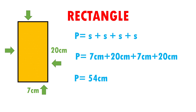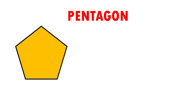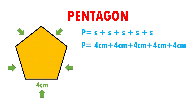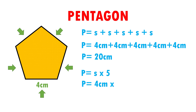This means that the outline of the rectangle measures 54 cm. Now, the pentagon. Each of its sides measures 4 cm. The formula is perimeter equals side plus side plus side plus side plus side. Substituting data, perimeter equals 4 cm plus 4 cm plus 4 cm plus 4 cm plus 4 cm. When adding, the perimeter is equal to 20 cm. Since all the sides of the pentagon measure the same, I can also use the formula: perimeter equals side times 5. Perimeter equals 4 cm times 5, which gives perimeter equals 20 cm. The outline of the pentagon is 20 cm.